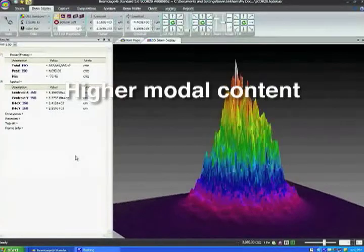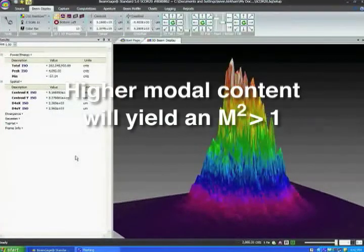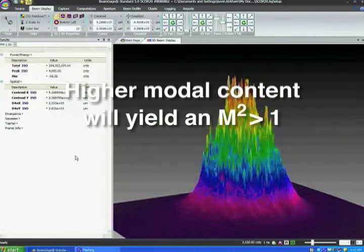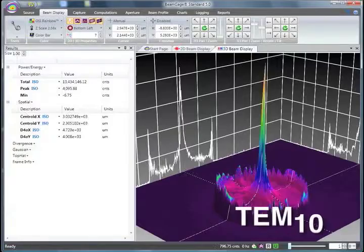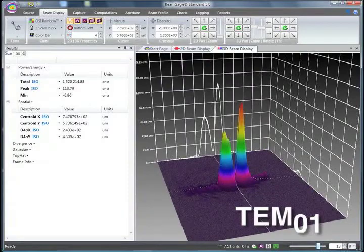A higher modal content will yield an m squared value greater than one. Thus, the final m squared value of a laser depends on the percentage of all modes present in the output beam.